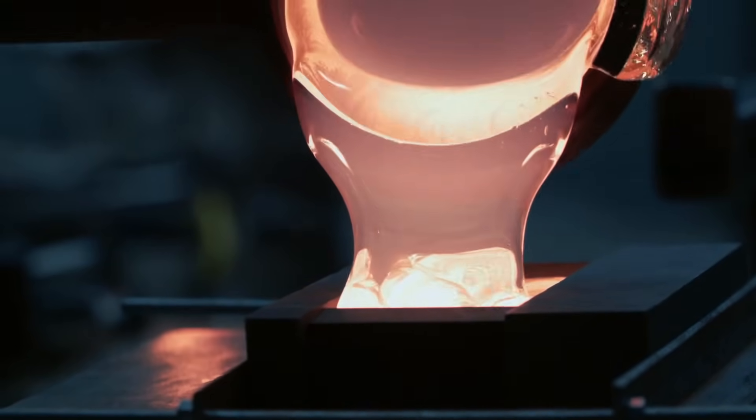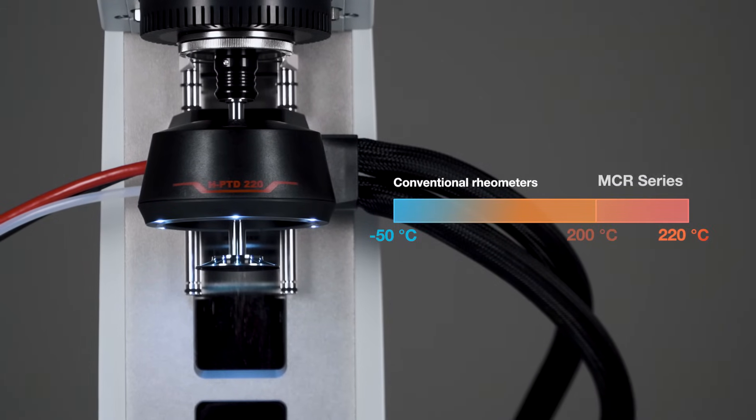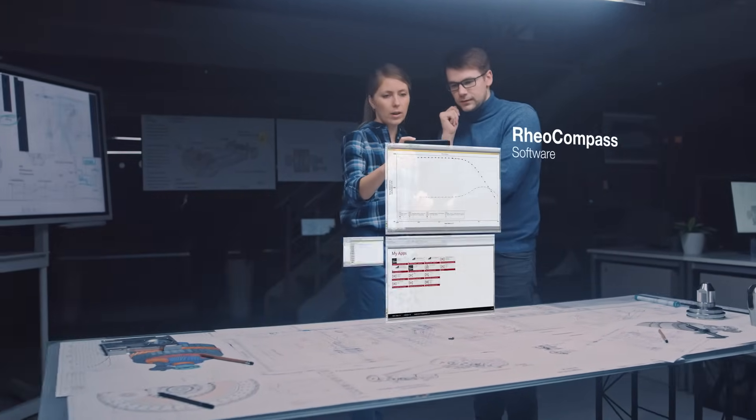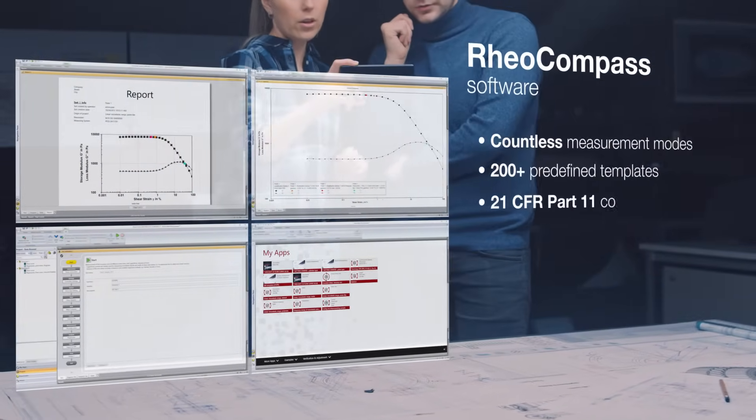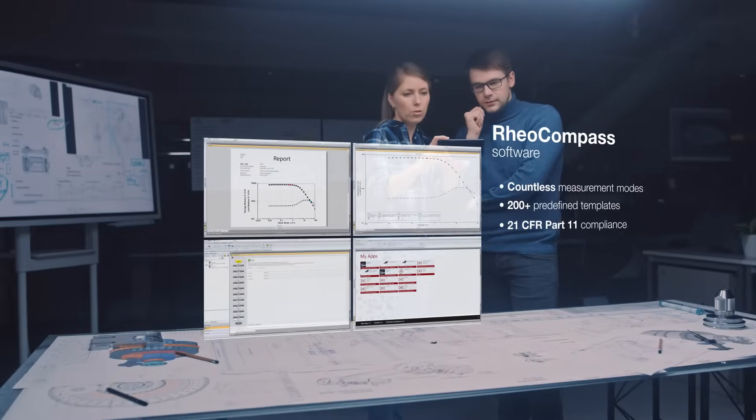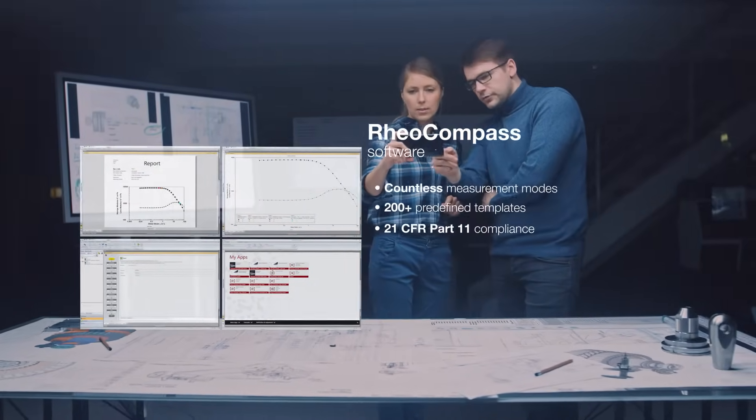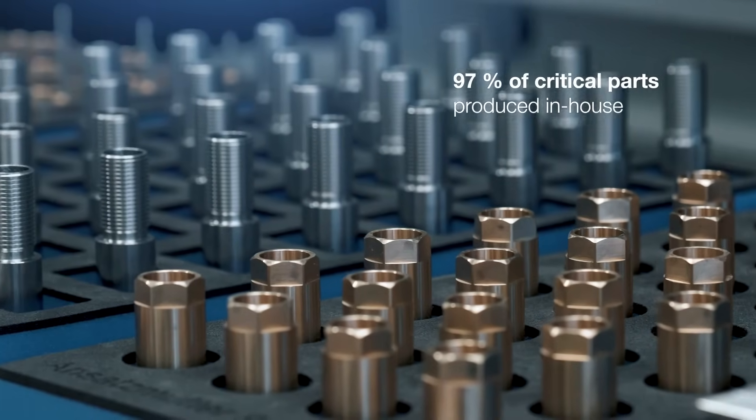Our Peltier heating systems also reach unmatched temperature ranges. The RIO Compass software provides a spectrum of possibilities with countless measurement modes, 200+ predefined templates, and top-level 21 CFR Part 11 compliance. 97% of all critical mechanical parts are manufactured in Austria in our in-house production facility.